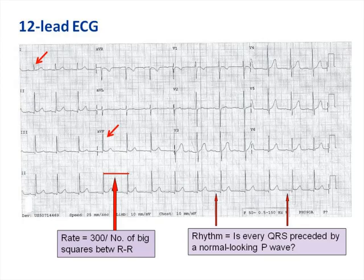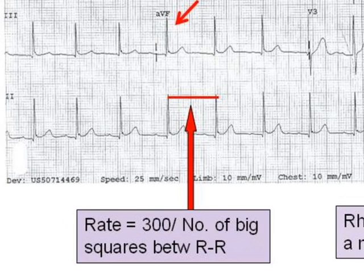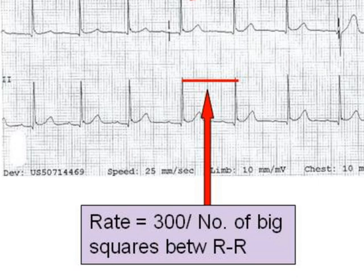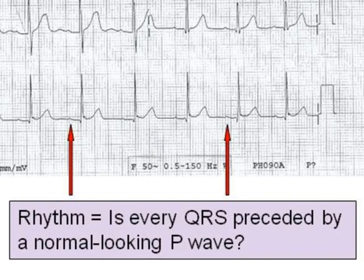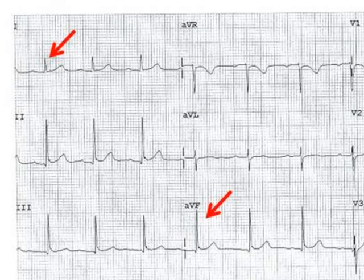Look at this 12-lead ECG. We start by determining the rate, rhythm, and axis. The rate is determined by 300 divided by the number of big squares between R to R. Look — is every QRS preceded by a normal-looking P wave? If so, this is normal sinus rhythm. Also look at leads I and aVF: if the complexes are both positive, this is normal axis.